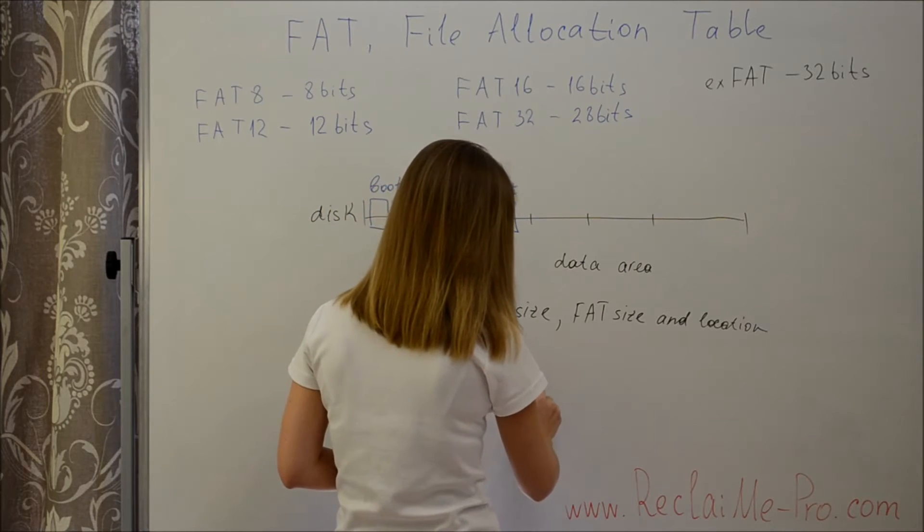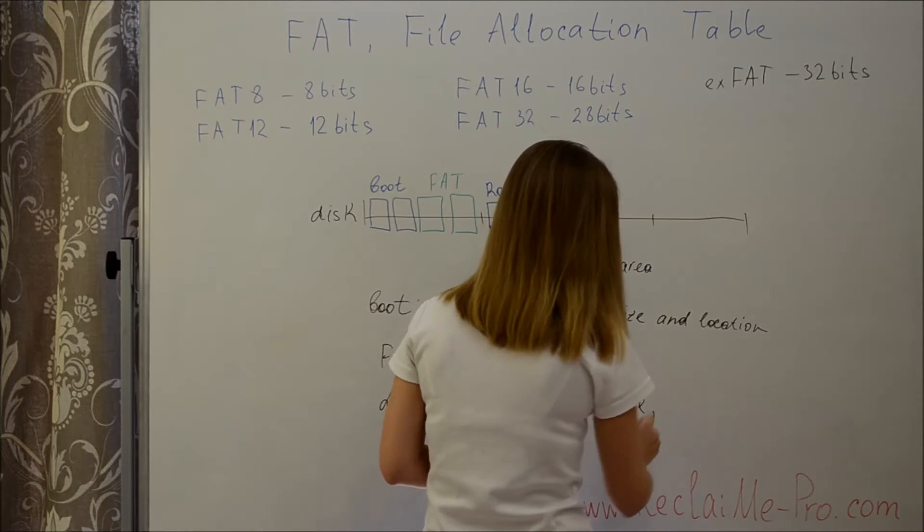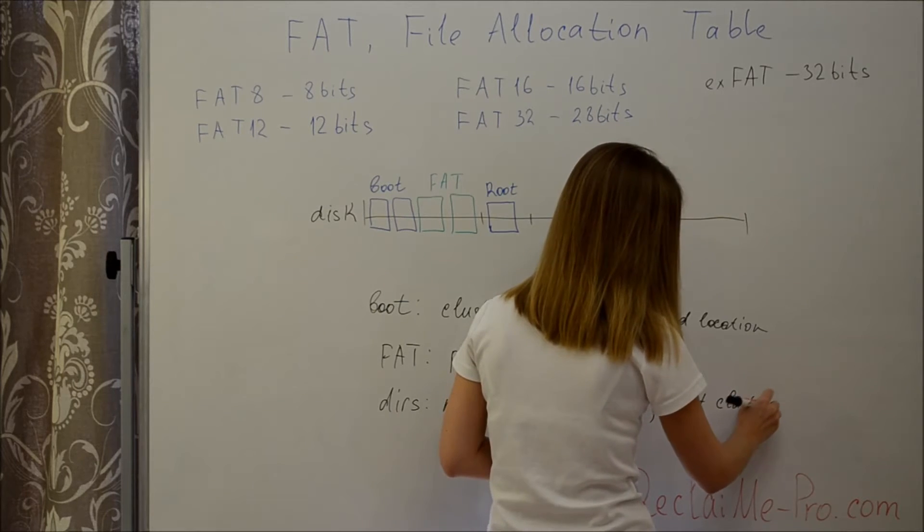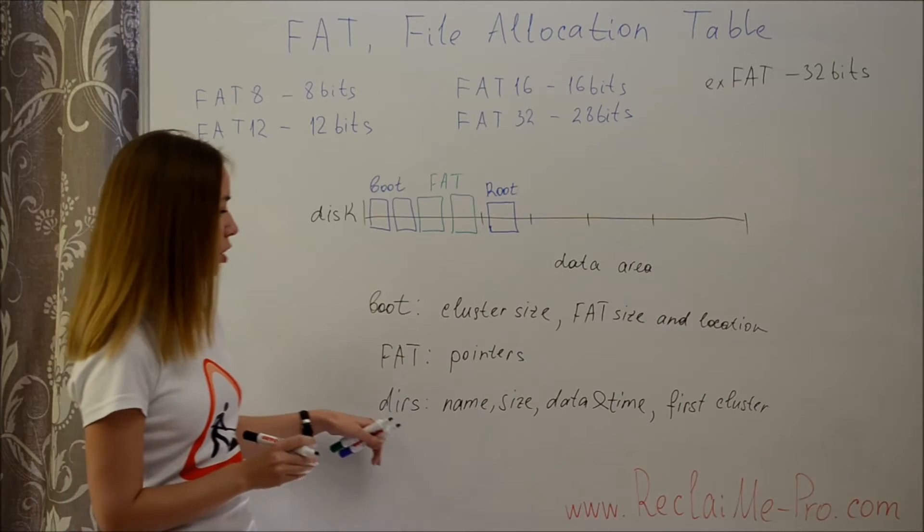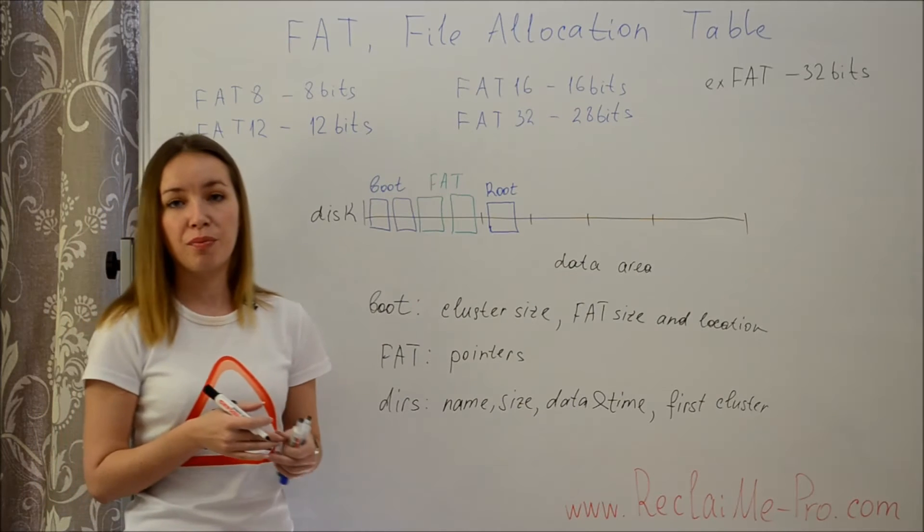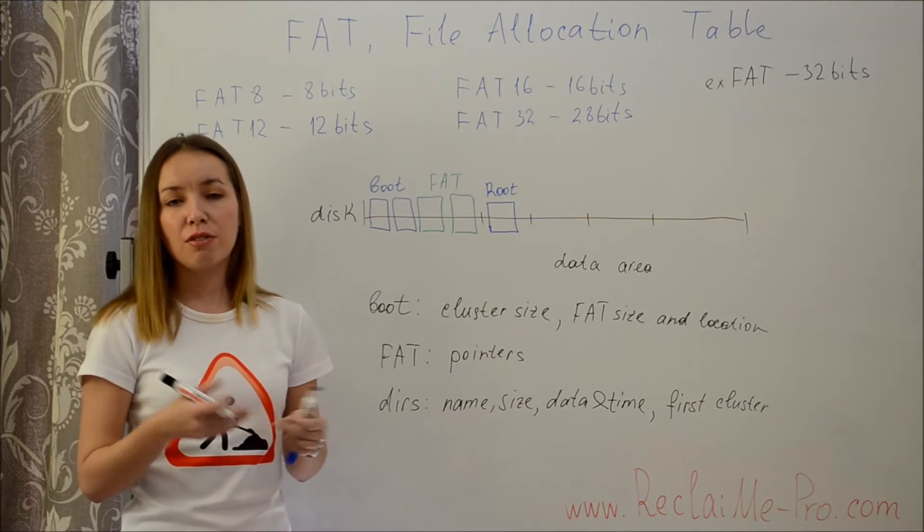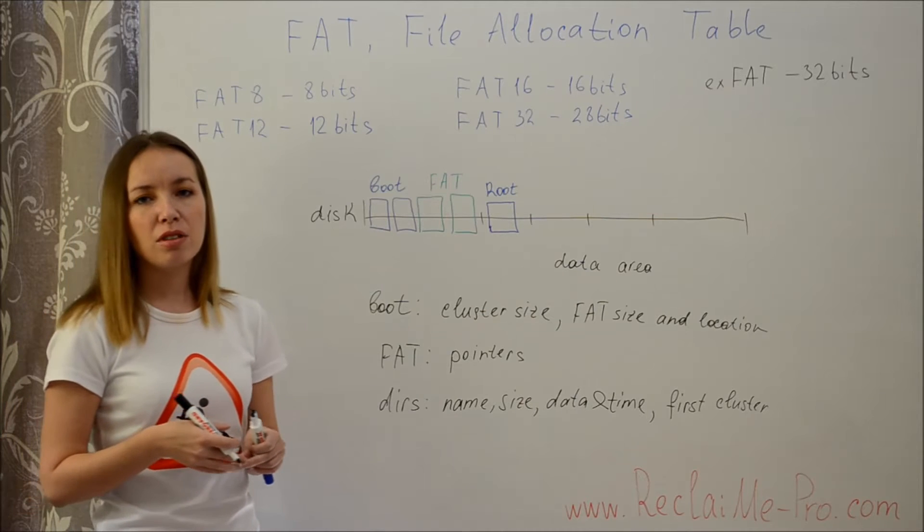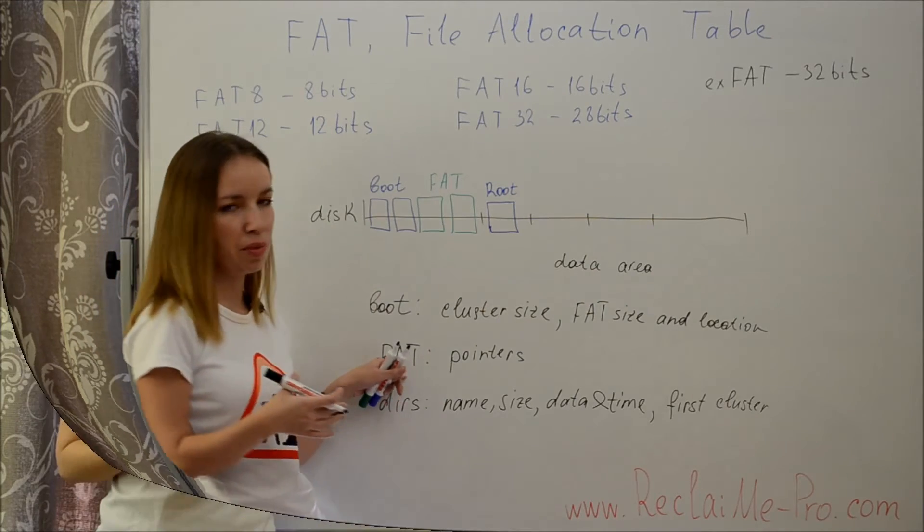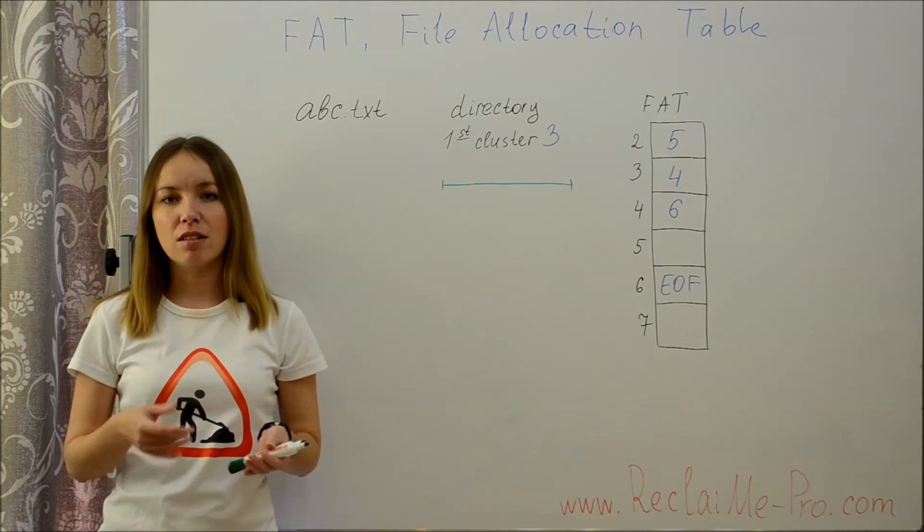If the directory element is known, the file size and the number of the first cluster can be taken from it. If a file occupies less than one cluster it is enough to read this cluster. If a file occupies more than one cluster, the numbers of second and subsequent clusters can be taken from FAT tables. For each cluster, FAT table stores either the number of subsequent clusters or the sign that this is the end of the file, or zero if this is a free cluster.